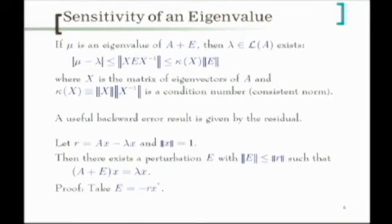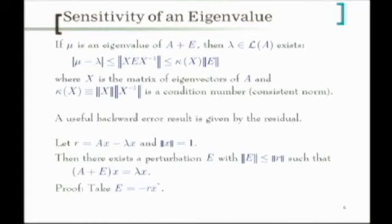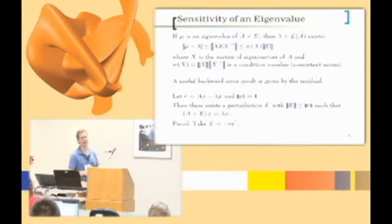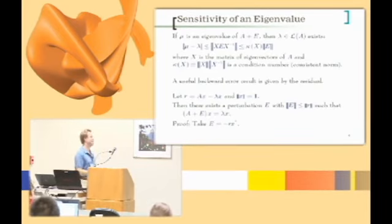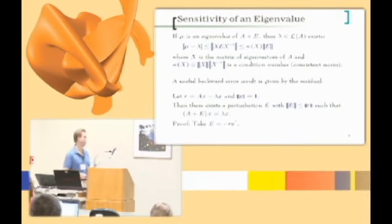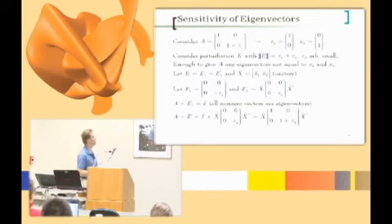A useful backward error result is given by the residual. If you find an eigenpair (λ, x) such that Ax − λx = r and r is really small, then we know there exists a perturbation E of norm less than the residual such that this is exact. So if you have computed an eigenpair with a really small residual, you know you've exactly solved a very nearby eigenvalue problem. That means if you know from your problem's background that it is not very sensitive to perturbations, you know you have a good solution. If the problem is inherently sensitive, there may be nothing you can do — even going to higher precision may not buy you anything.